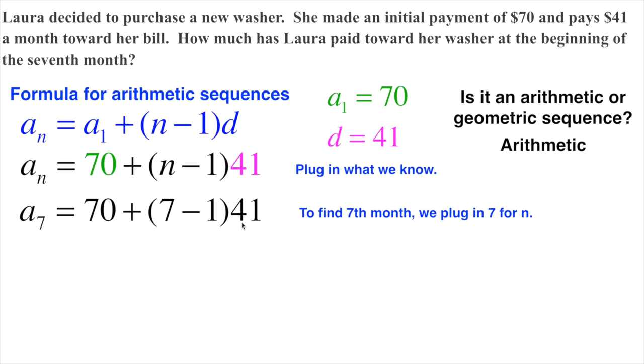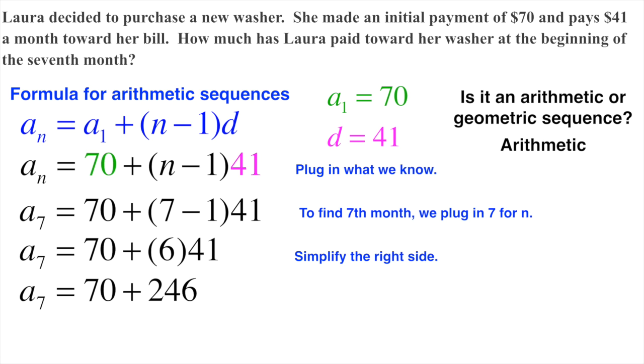We just need to make sure we do our order of operations correctly. 7 minus 1 is 6. 6 times 41 gives me 246. And then we have our initial payment of $70. So she's paid a total of $316 toward this new washer.